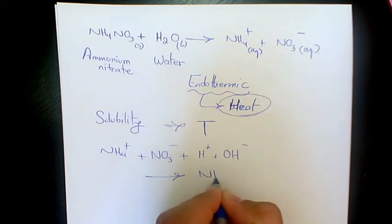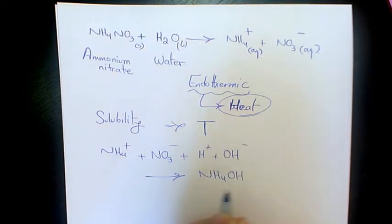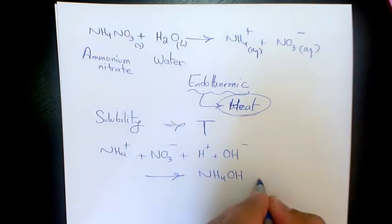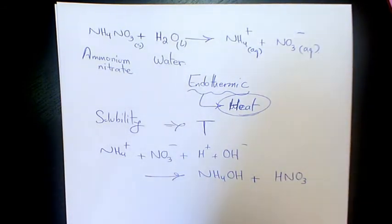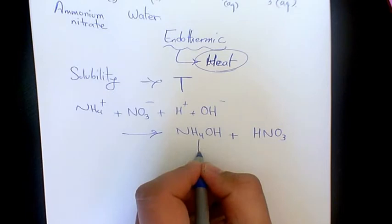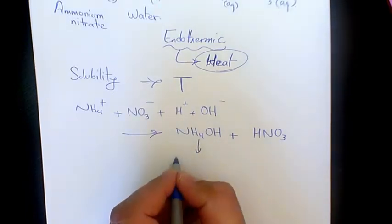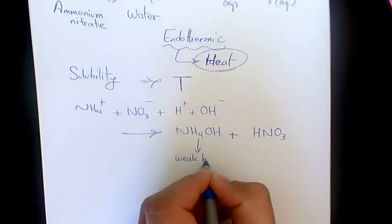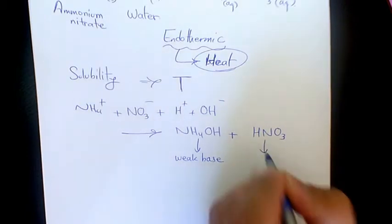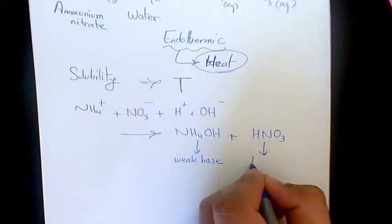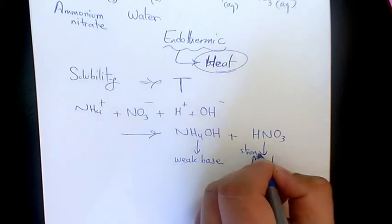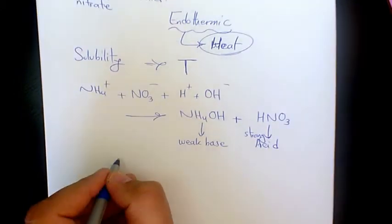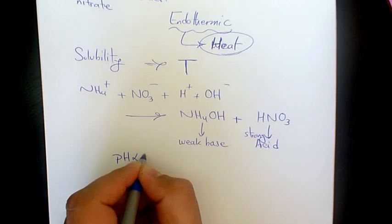We get ammonium hydroxide and HNO3. NH4OH is a weak base and HNO3 is a strong acid. So the pH of the final solution is less than 7 and we're going to deal with an acidic solution.